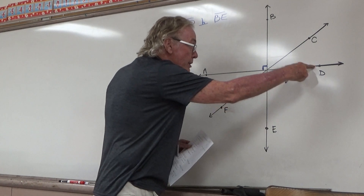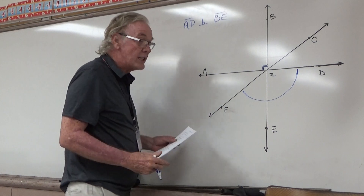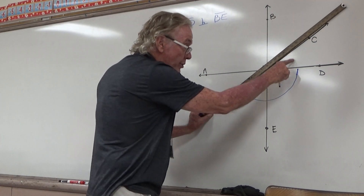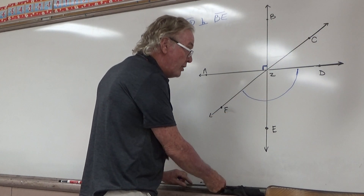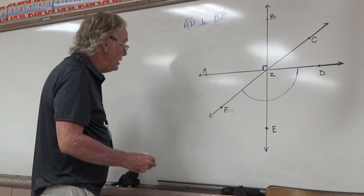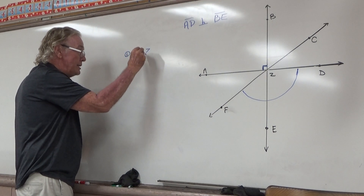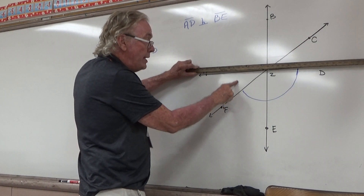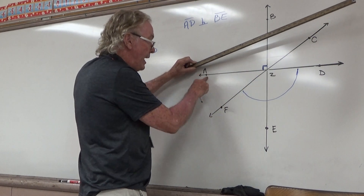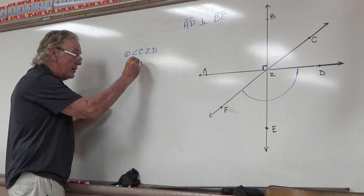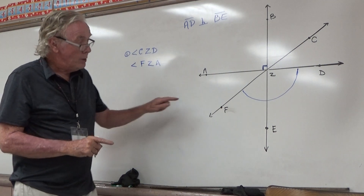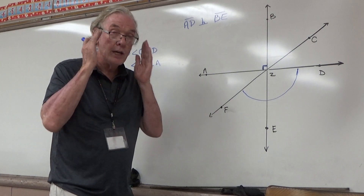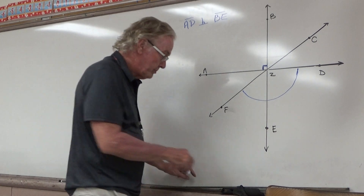I'm supposed to find a linear pair with angle DZF. Focusing on angle DZF — starting from D to Z to F — here's angle DZF. With my straight edge, this angle makes a linear pair with the small angle right there. That would be angle CZD. But there's another angle that forms a linear pair with DZF: angle FZA. These two angles, CZD and FZA, each form a linear pair with angle DZF, and a linear pair is always supplementary — always two angles that add up to 180 degrees.